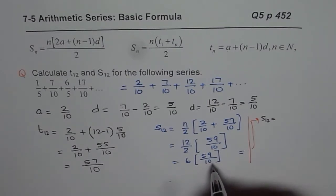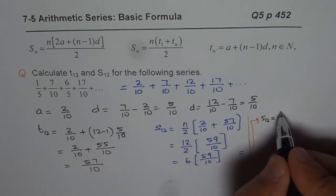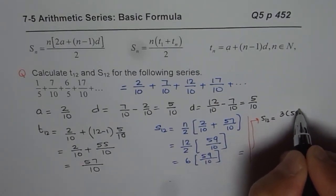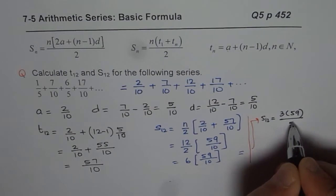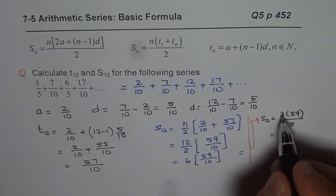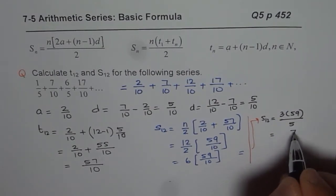You can write in decimals if you want to, or in fractions it will be 3 times 59 divided by 5. So that is 3 times 9 is 27, 7 is 2, 15 and 2 is 17. It is 177 by 5.